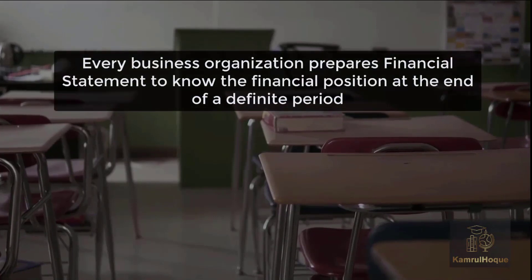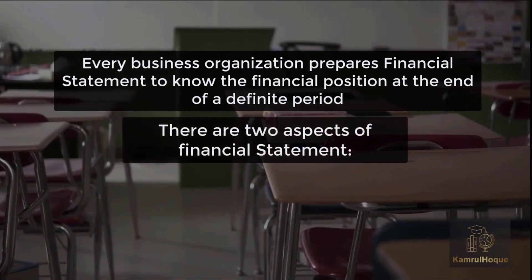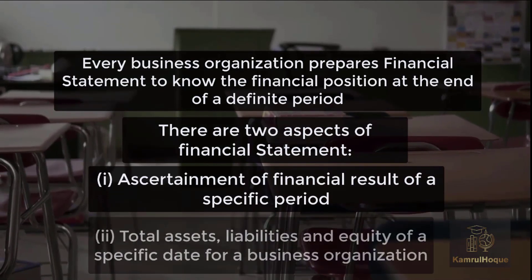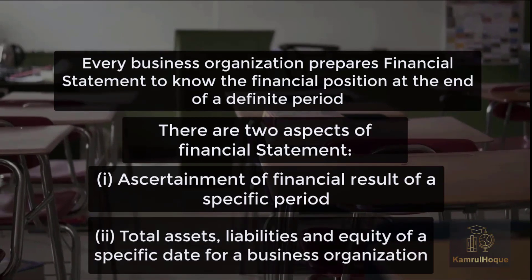Every business organization prepares financial statements to know the financial position at the end of a definite period. To keep up with the financial position of a business organization, we prepare financial statements. There are two aspects: number one, the financial result of a specific period; number two, the total assets, liabilities, and equity of a specific date.